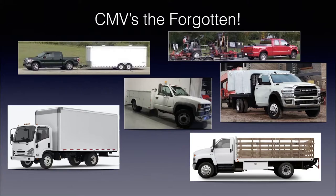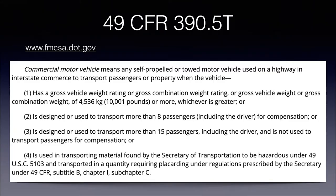Each one of these vehicles tells a story — some of them I'll have side videos on to help make this a little bit more clear. The term commercial motor vehicle is defined in the Code of Federal Regulations — the DOT rules — in 390.5T, and that means any self-propelled or towed vehicle used on a highway in interstate commerce to either transport passengers or property. The first point that everybody's got to remember is that it has either a gross vehicle weight rating or combination weight rating.